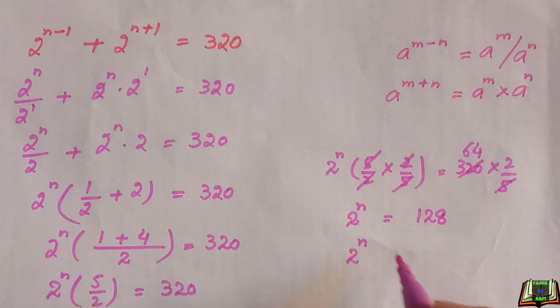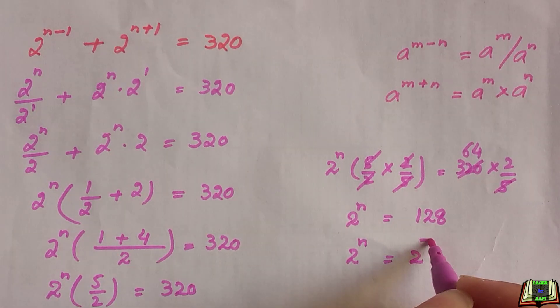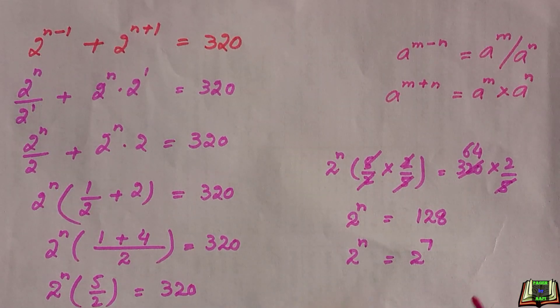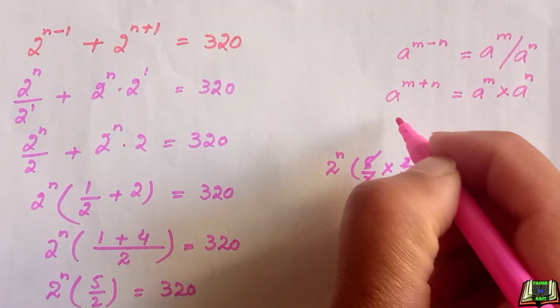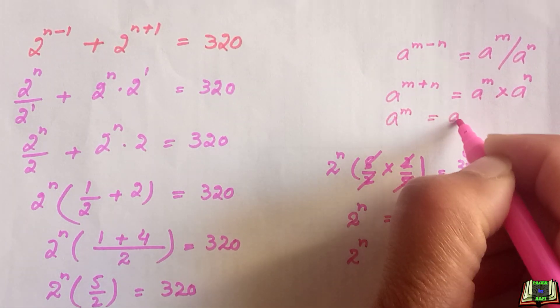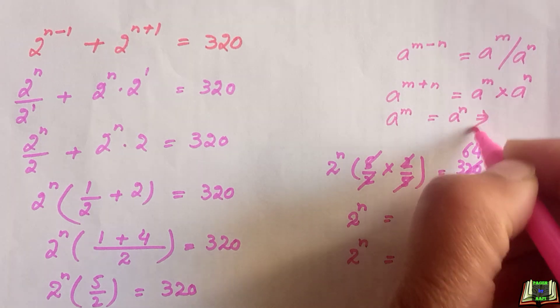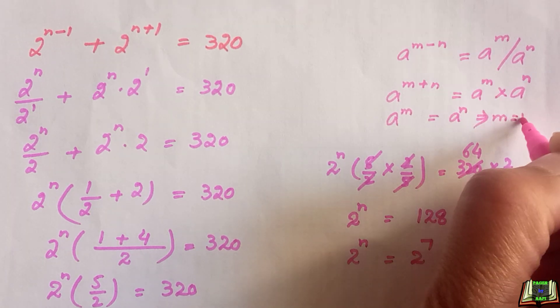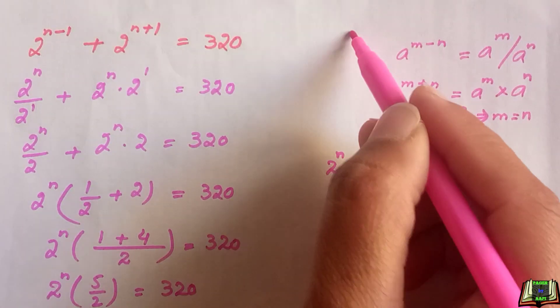128 can be written as 2 raised to power 7. Here we are going to use this rule: if a raised to power m is equal to a raised to power n, then m is equal to n. If bases are same and equal, we can equate the powers.